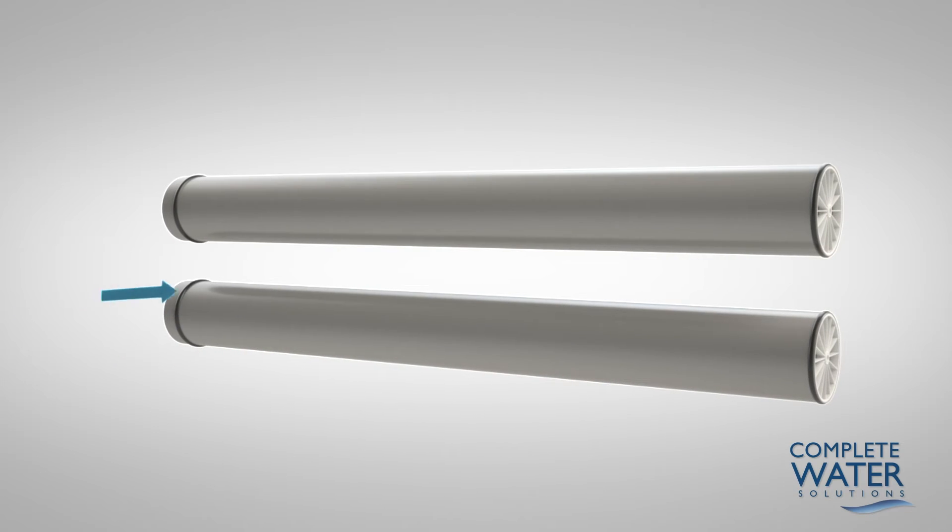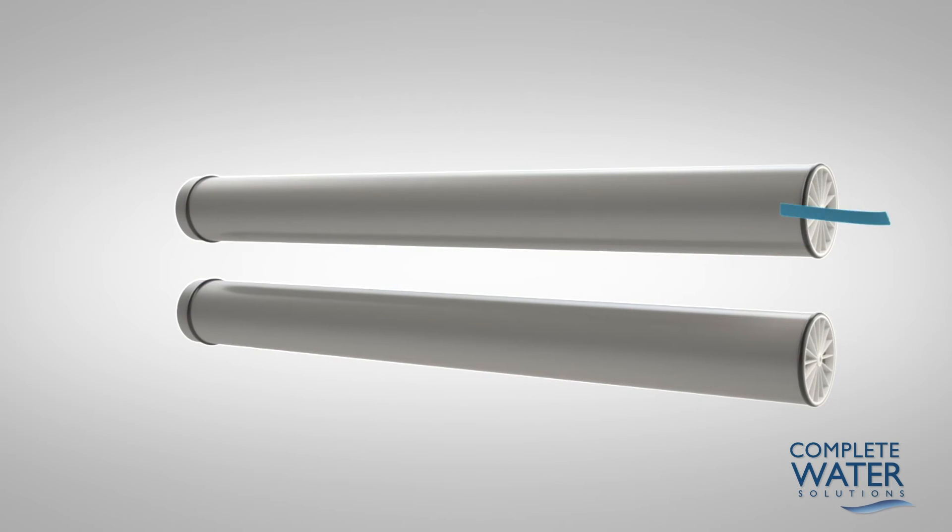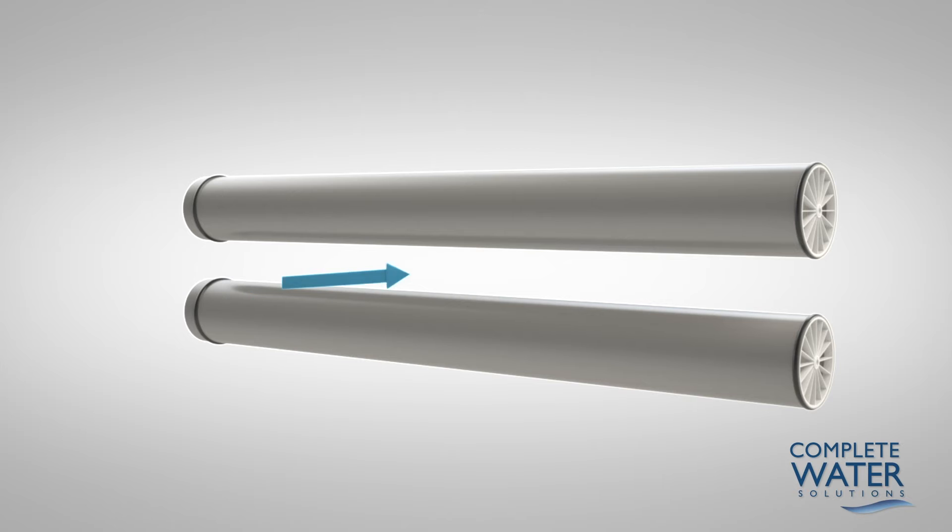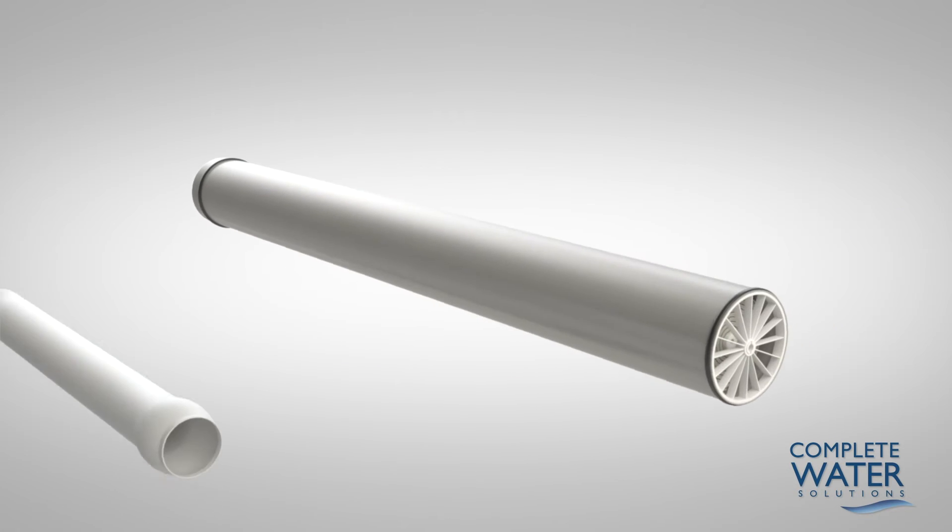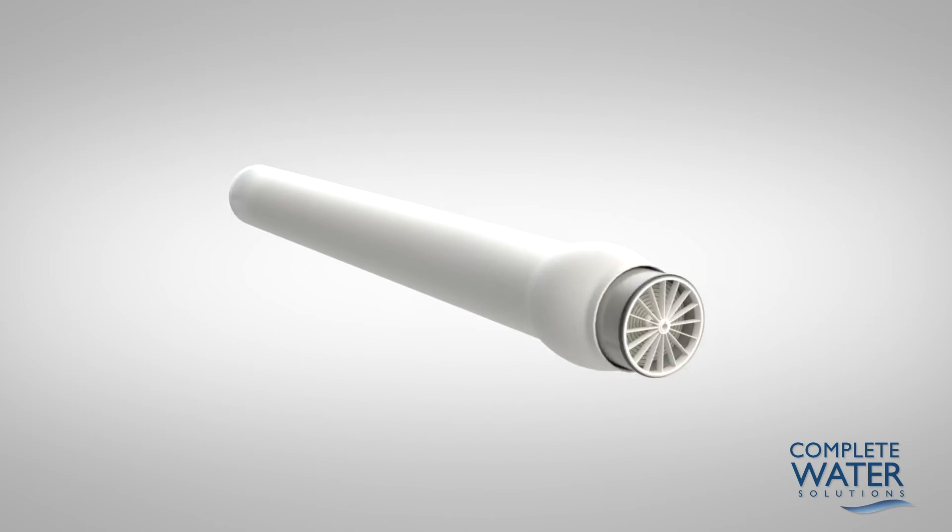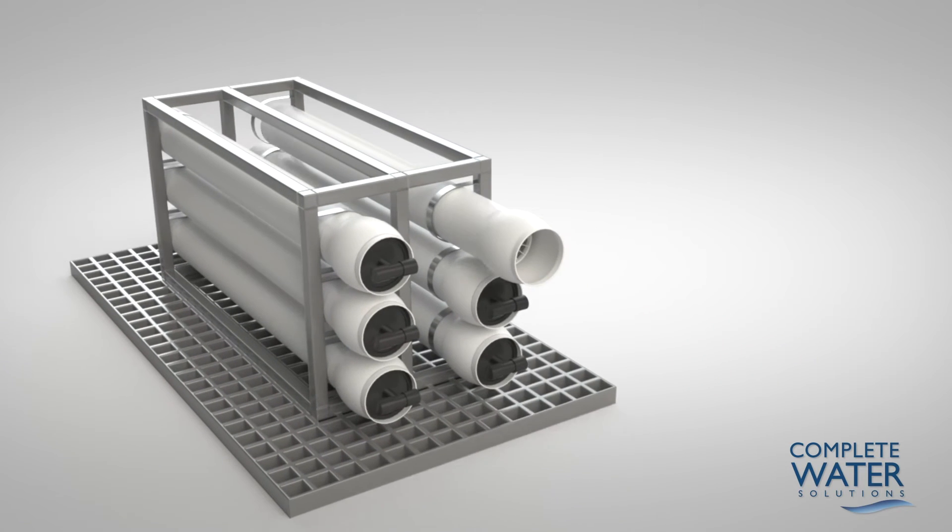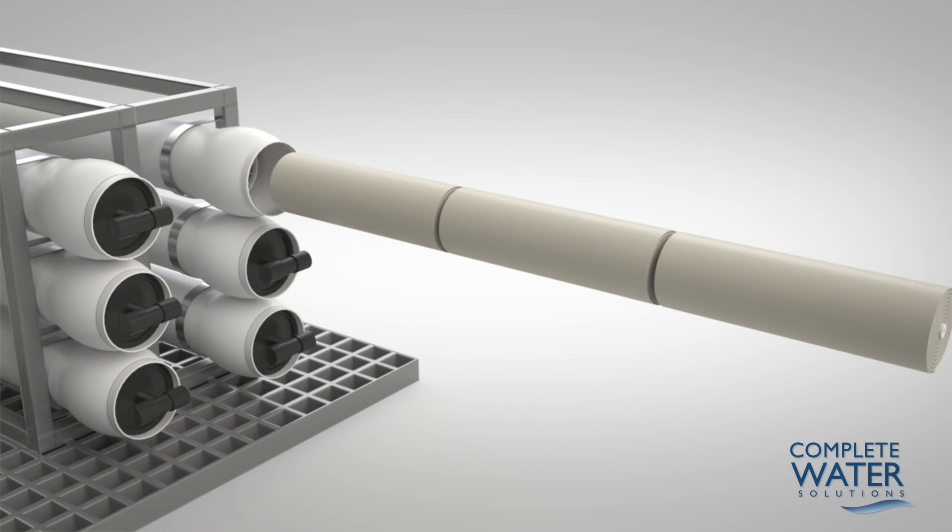The concentrate or waste from that vessel flows to another stage producing more reverse osmosis water. In this Complete Water Solutions reverse osmosis example, there are six reverse osmosis trains, each with three stages. This design produces the highest amount of reverse osmosis water with reduced concentrate or waste.